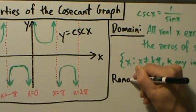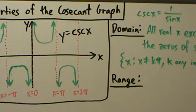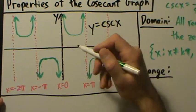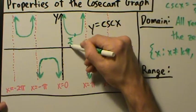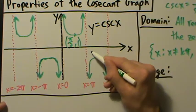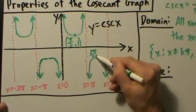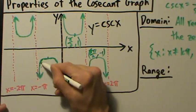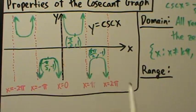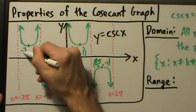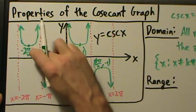How about the range? The range is actually going to be the same as the secant graph, but we'll discuss it briefly here. First, let's label some points on the graph. This point right here is (π/2, 1). This one is (3π/2, −1). This one is (−π/2, −1). And this point right here is (−3π/2, 1).